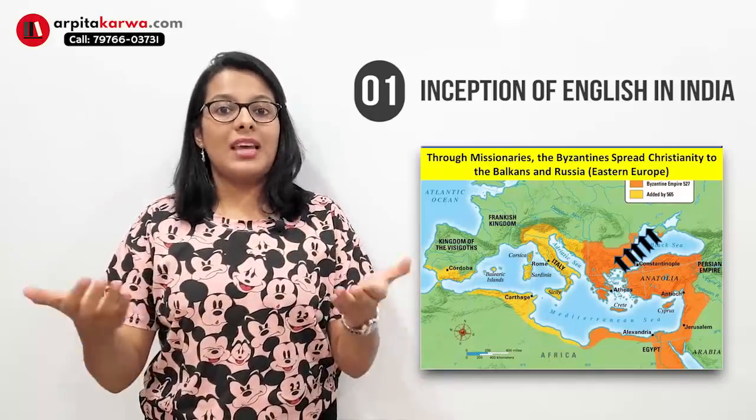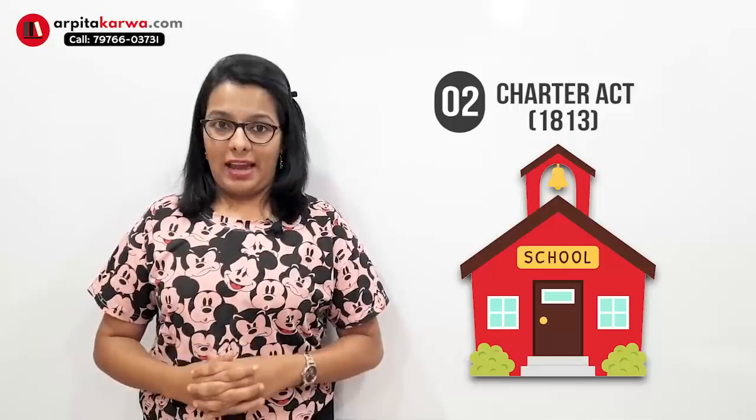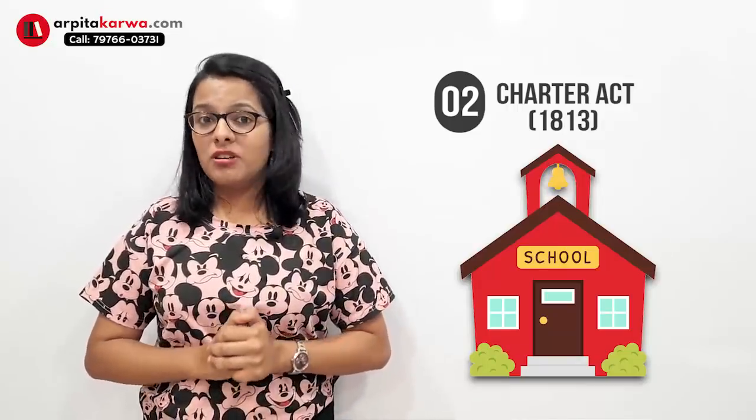The next important event which helped English flourish across the Indian subcontinent was the Charter Act of 1813. This act was passed by the Parliament of the United Kingdom. It stated that money would be allocated to the East India Company's departments to promote education, encourage people to take up English as a language, and it also gave permission to missionaries to come to India.